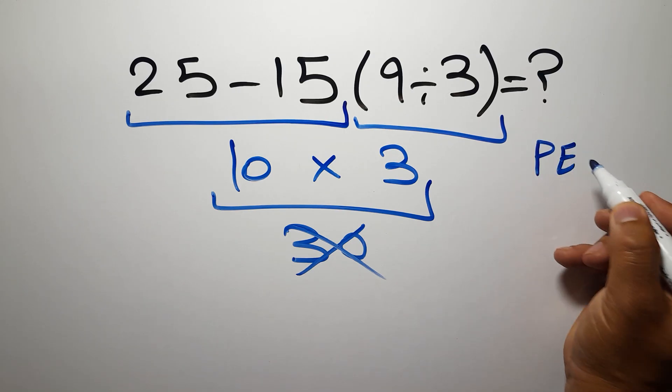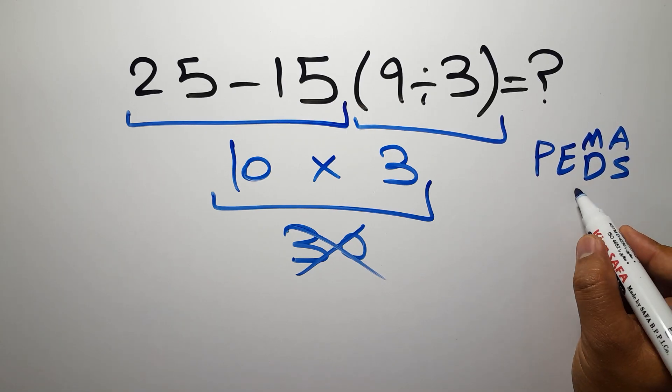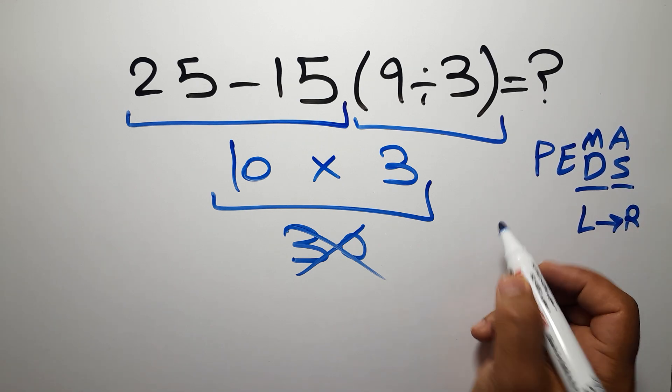Remember that multiplication and division have equal priority and we have to work from left to right. The same applies to addition and subtraction.